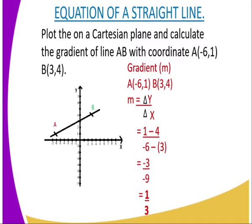If you want to get the gradient, we have coordinate A here at (-6, 1) and coordinate B at (3, 4). Therefore, in order to get the gradient of this line, you are supposed to say change in y over change in x.